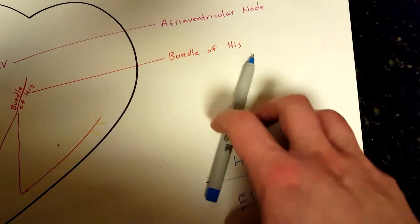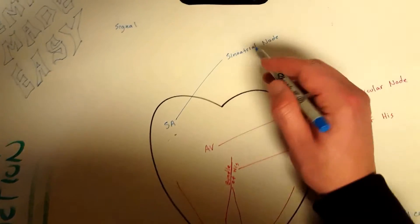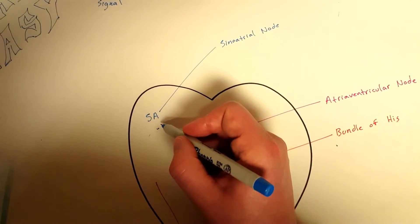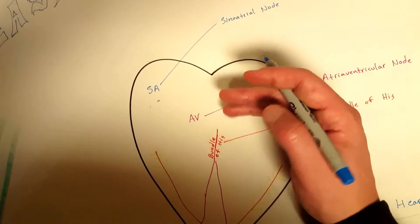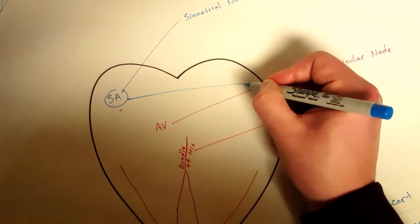You have this thing called the SA node, the sinoatrial node, and this is what sets the pace for your heart contractions. Energy is created here and then it's distributed. It goes this way, this one contracts, this contracts at the exact same time.